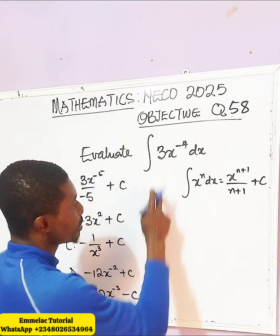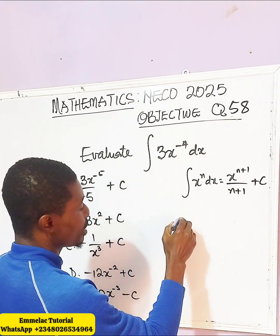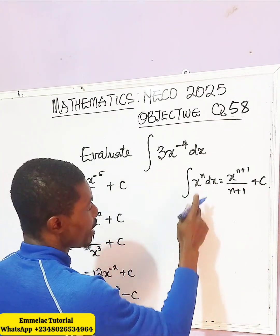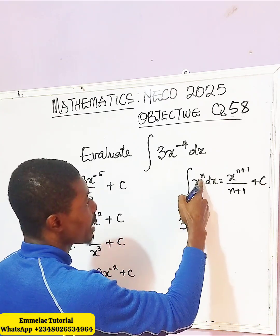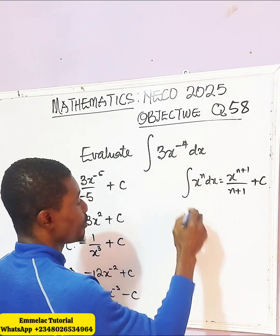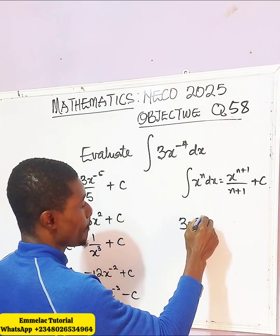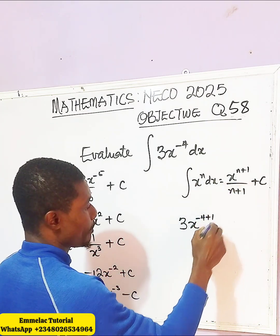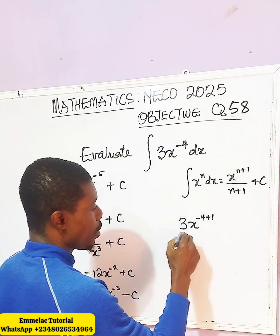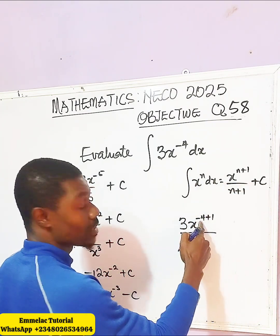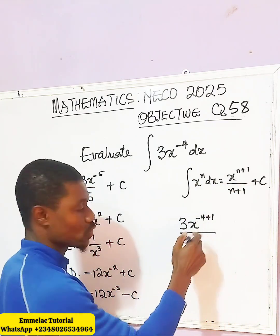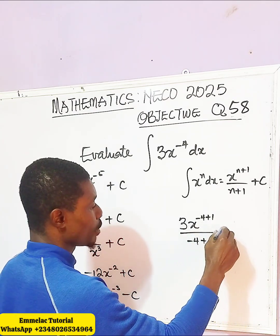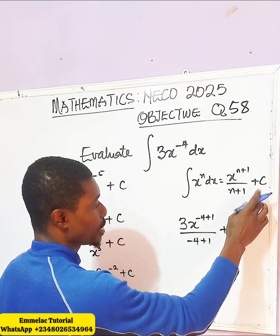What we need to do here now is bring down your 3, then x, then n which is negative 4, so now plus 1, all over negative 4 plus 1, then plus C.